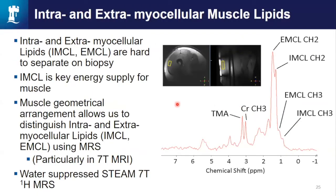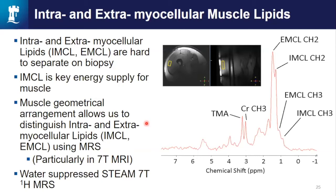Another thing you can do at 3T — but better at 7T — is look at intramyocellular (IMCL) and extramyocellular lipids (EMCL). Fat in muscle is either inside or around the cells. In the horizontal bore 7T scanner, if muscles are aligned along the scanner, you get splitting of the peak between EMCL and IMCL due to susceptibility effects from the fat geometry. This splitting is very hard to fit at 3T but can be resolved at 7T with good line width. IMCL is a key energy supply for muscle and a very keenly sought marker by muscle physiologists — it's very hard to separate even from biopsies.